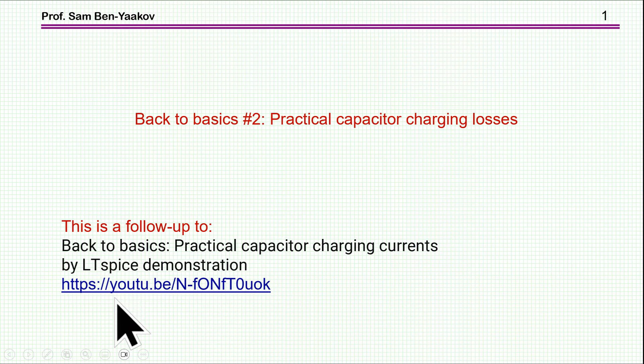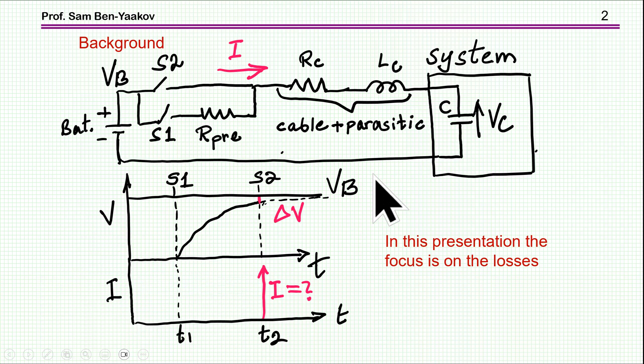I'm going to print the link in the description section of the video that you are now watching. In the previous presentation, I was discussing this system in which we have a capacitor bank here, it could be of an inverter, a converter or any other system. And then we have a battery source, a power source, and we need to connect the battery to the unit, that is to the capacitor. Now if we do it directly through S2, then it's going to be a very, very high current, and it could be damaging the semiconductors as well as the capacitor.